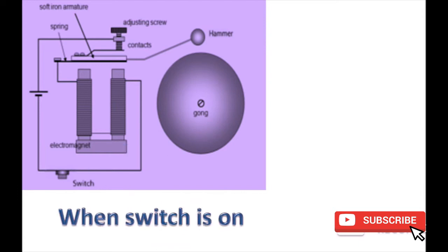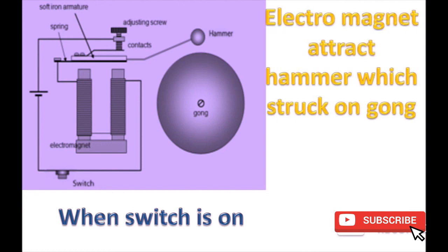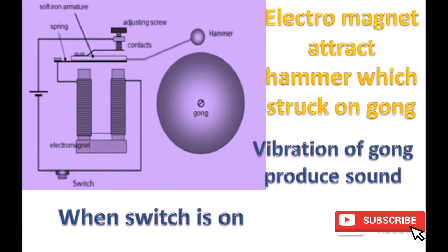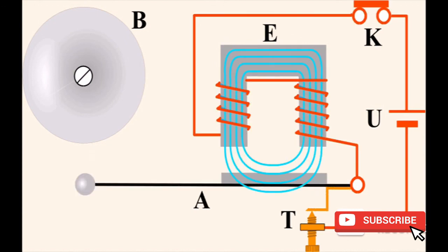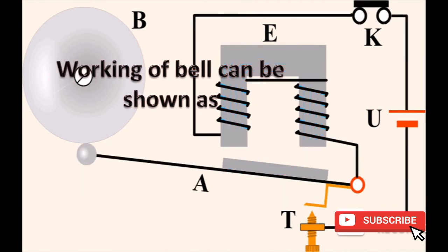When the switch is on, the electromagnet attracts the hammer which strikes on the gong and produces sound energy due to vibration of the gong. The working of the bell can be shown as illustrated.